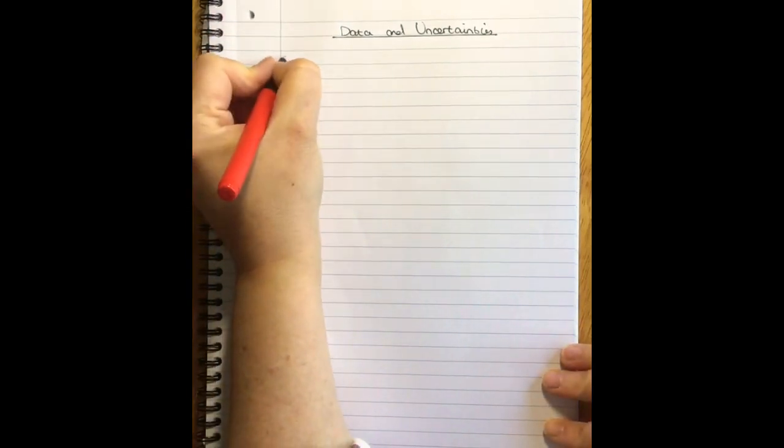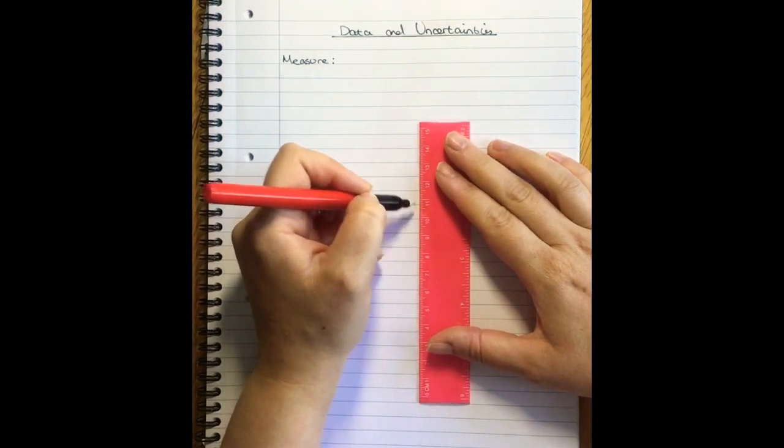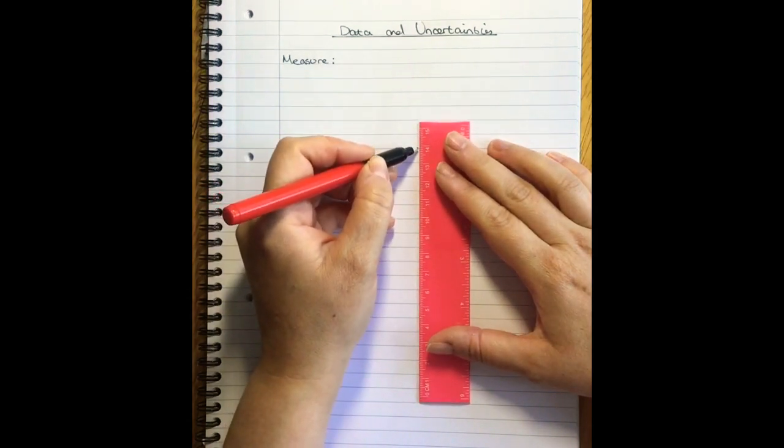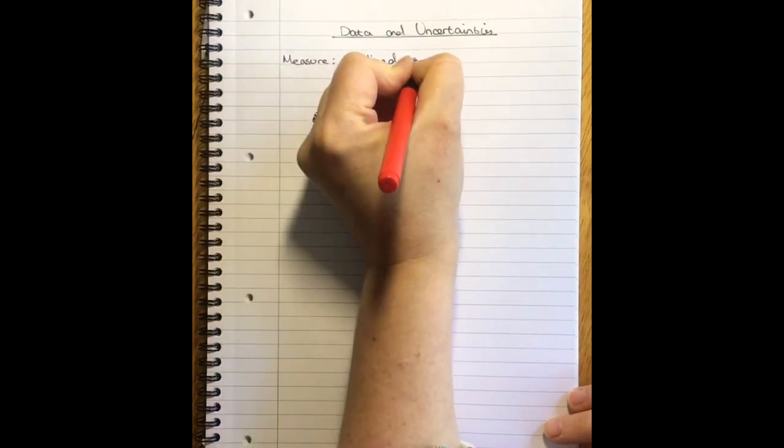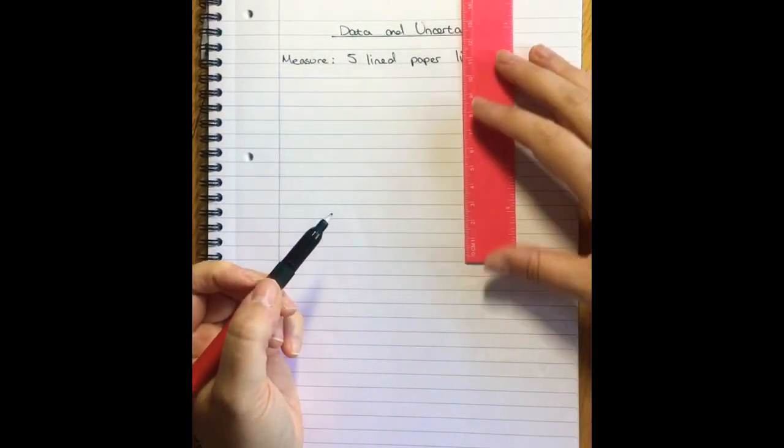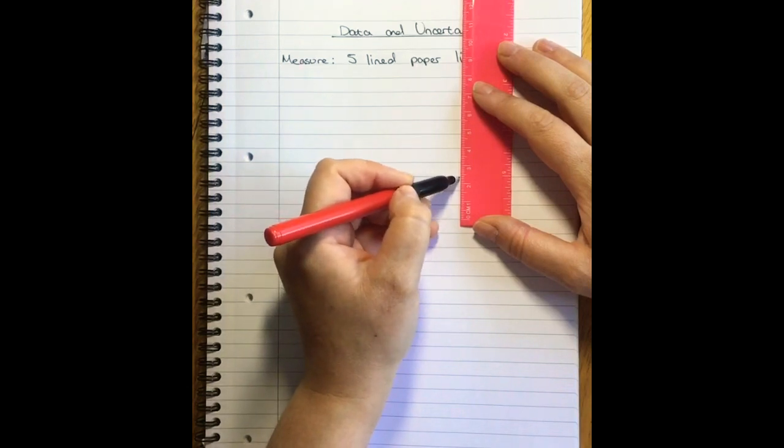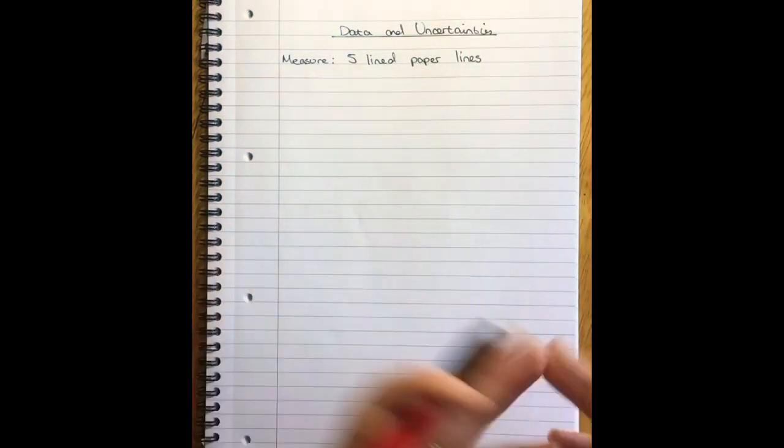So we are going to measure the first thing, which is the height of one, two, three, four, five lines on a lined piece of paper. So literally sticking your ruler on there and going one, two, three, four, five and taking that measurement. The purpose of this one is I want one measurement where we're all pretty much going to get exactly the same answer so you can really see that your numbers match mine.